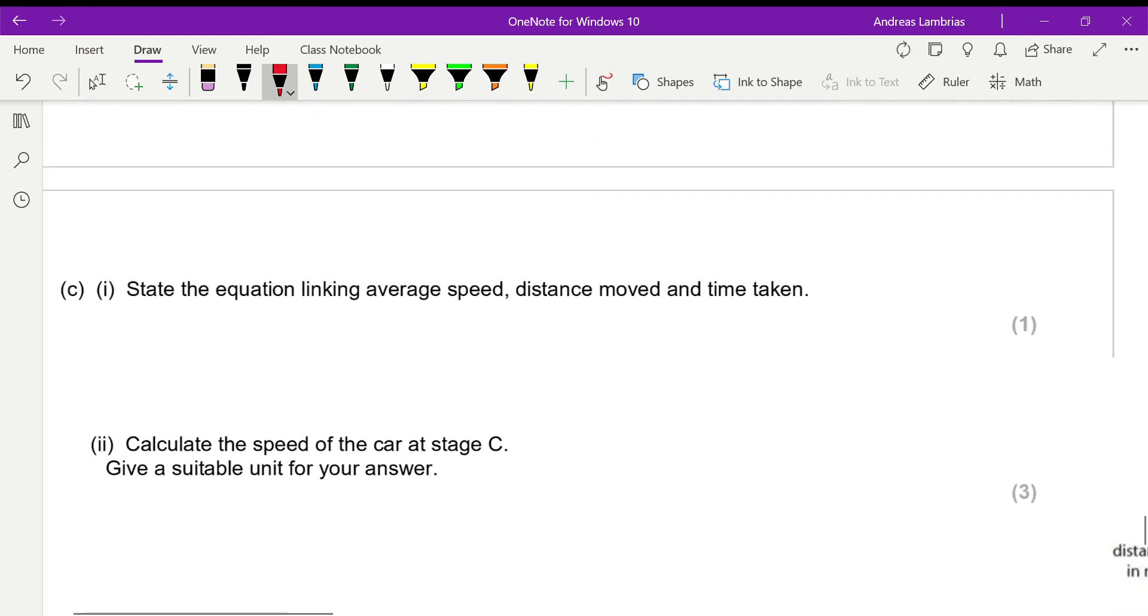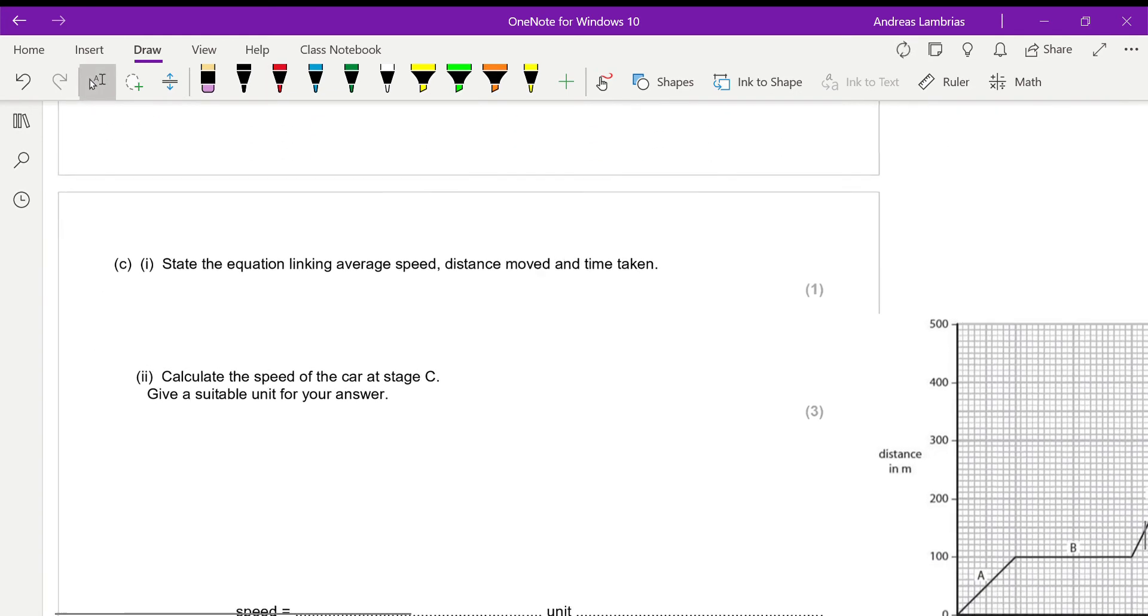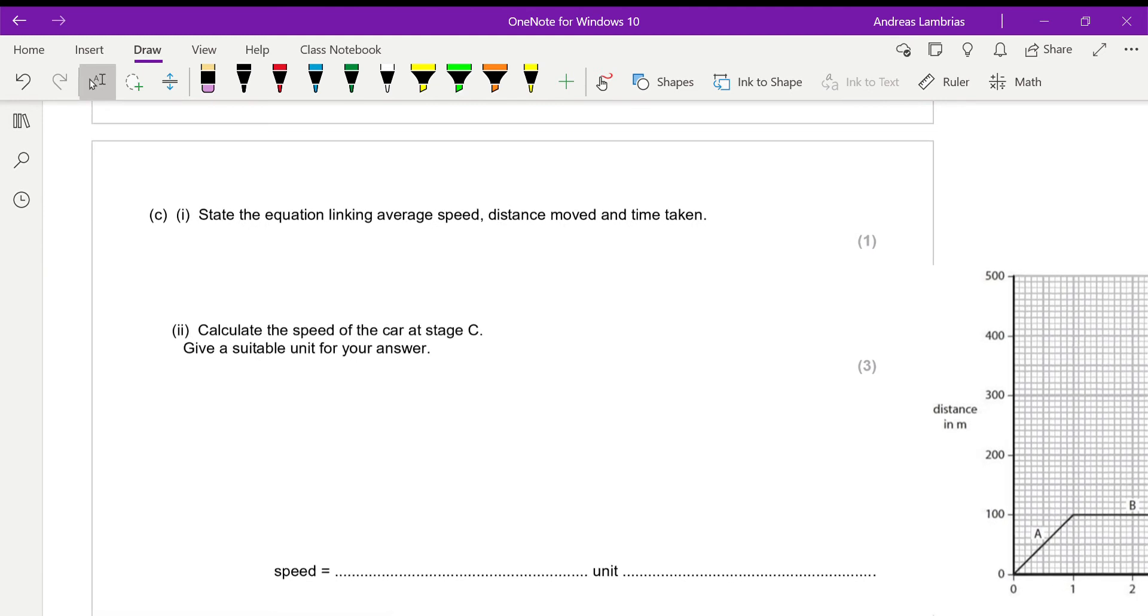Moving on, state the equation linking average speed, distance moved and time taken. In this kind of questions try to use the words that are given there. A lot of students try to write the equation using symbols and if they get a wrong symbol they miss a point. So it's better, it's more safe if you use the words that are given. For average speed, our formula will be distance moved over time taken.